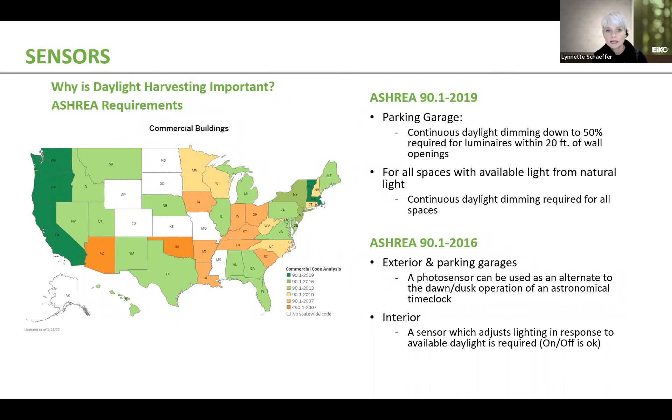Another big reason is it helps maintain and meet local codes and energy codes. So for instance, if you look at ASHRAE 90.1 2019, specifically for parking garages, it is required that continuous daylight dimming down to 50% is required for luminaires within 20 feet of wall openings. It also goes on to say that for spaces with available light from natural light, continuous daylight dimming is required for all spaces. Just depends on what ASHRAE code you are part of and what your local codes are. But daylight harvesting helps meet these different types of codes and requirements that now exist.